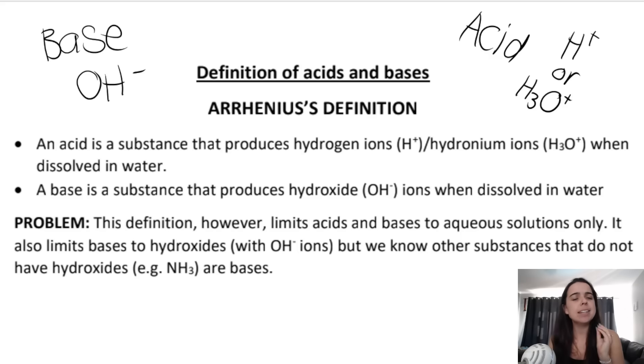We do know there are bases, for example ammonia NH3, which is a weak base but does not have OH- ions in it. This definition is good and exists, you must learn it, but it has some limitations.